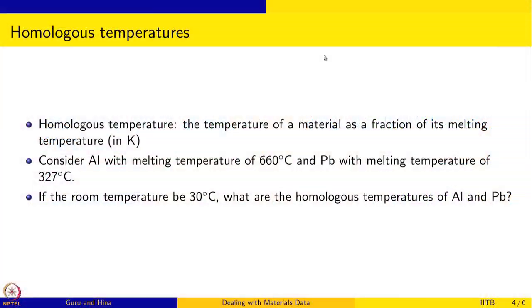In the Kelvin scale everything is positive, and homologous temperature is the given temperature divided by the melting temperature of the material. Then you can compare different materials: if homologous temperature is 0.5 for two different materials, both of them are at 50 percent of their respective melting temperatures. Let us calculate the homologous temperature for aluminum, which has a melting temperature of 660 degrees Celsius, and lead, which has a melting temperature of 327 degrees Celsius, both at room temperature of 30 degrees Celsius.